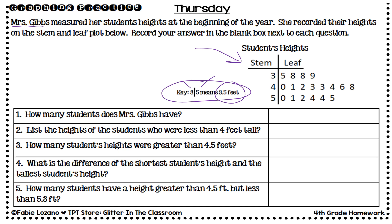Question one: how many students does Mrs. Gibbs have? This is easy — I just count the number of leaves. Counting all the leaves gives me 18, so Mrs. Gibbs has 18 students.